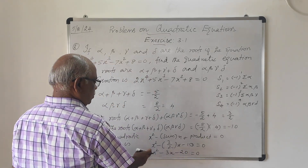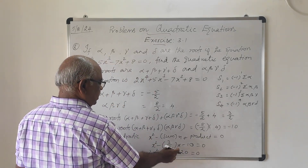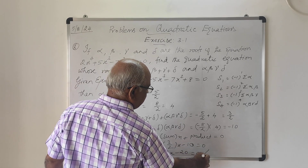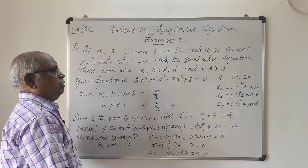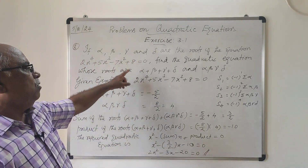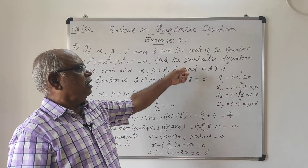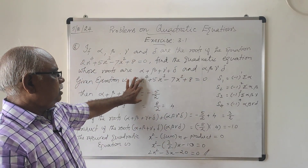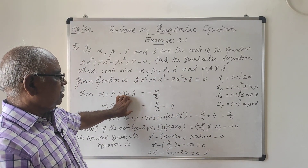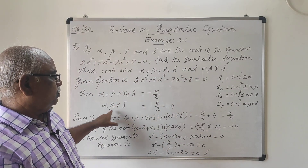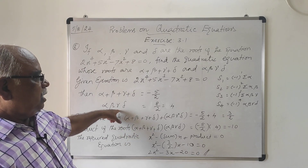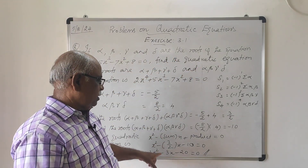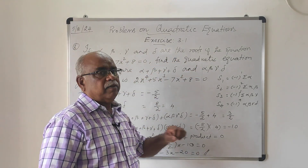So the required quadratic equation whose roots are (α+β+γ+δ) and (αβγδ) is 2x² − 3x − 20 = 0. This is the summation and the product of the four roots used as the two roots to form the quadratic equation.